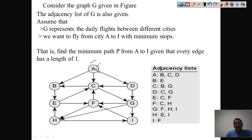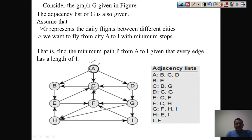We want to fly from city A to city I with the minimum number of stops. For example, you can go from A to D to G to I, which involves stops. There are many possible ways to reach I, and we are looking for the best possible way to reach the destination with the minimum number of stops. That is how this algorithm is going to help us.